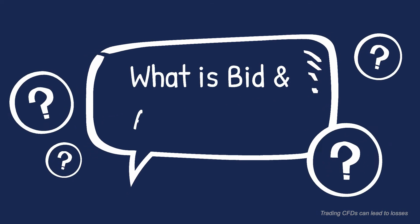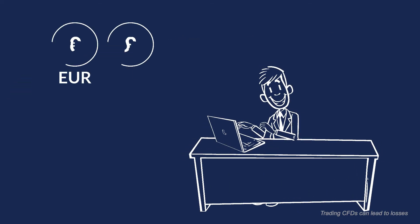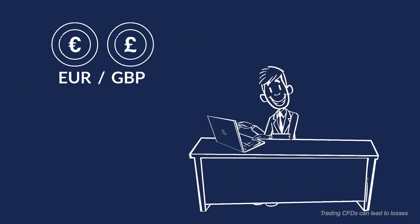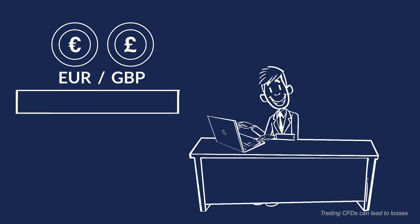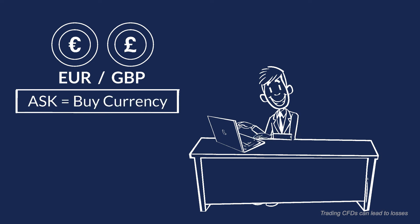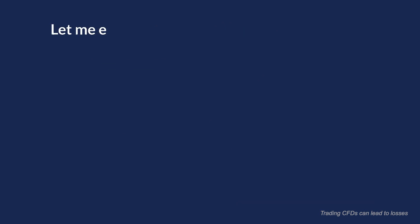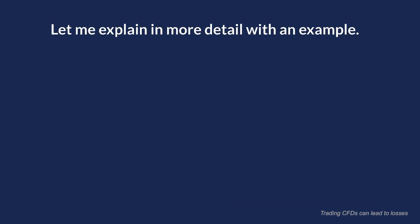What is bid, ask, and spread? Bid and ask: the bid price is the price a forex trader is willing to sell a currency pair for. The ask price is the price the trader will buy a currency pair for. Both of these prices are given in real-time and are constantly updating. Let me explain in more detail with an example.